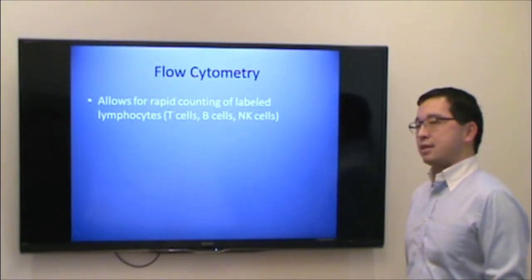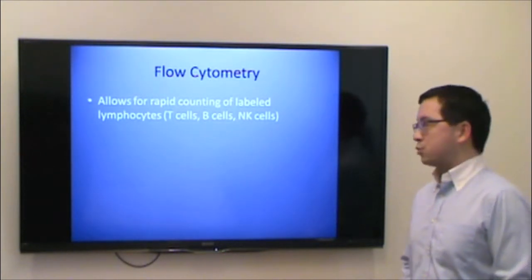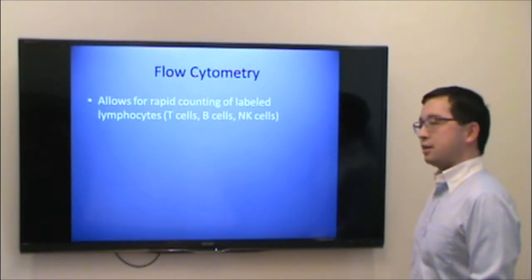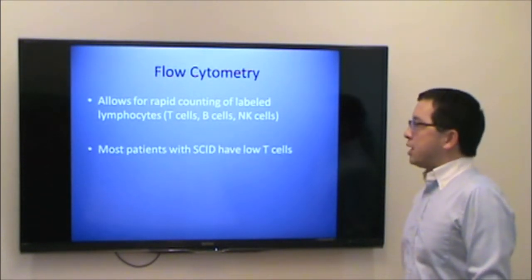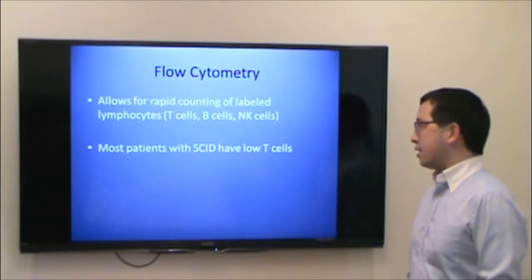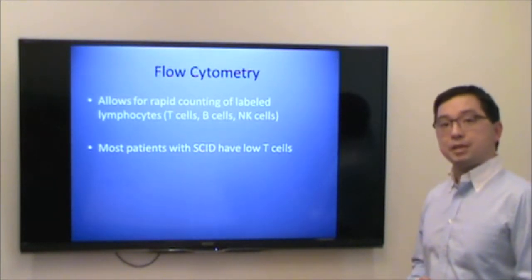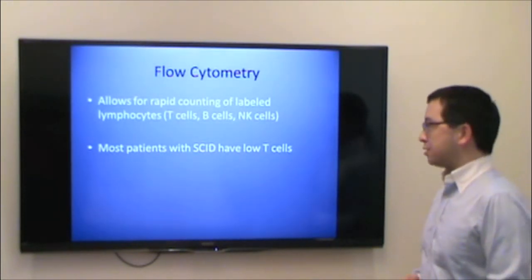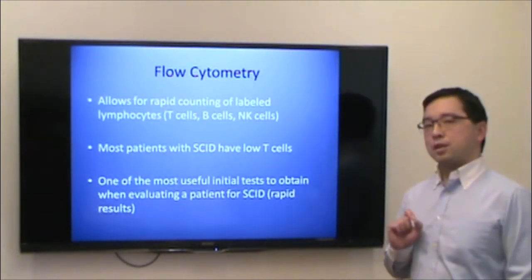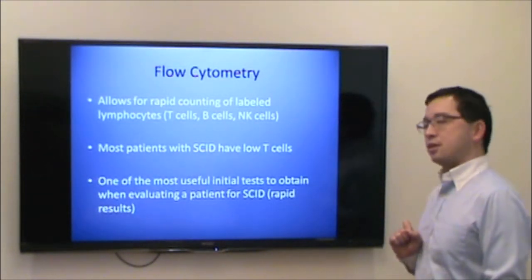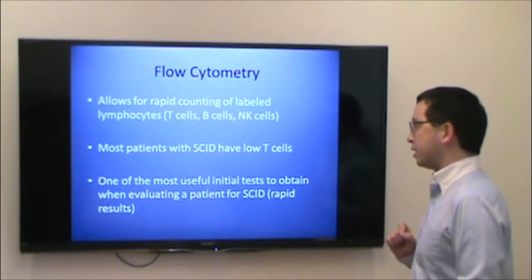Flow cytometry is a rapid method of counting labeled lymphocytes, which include T cells, B cells, and natural killer cells. Most patients with severe combined immune deficiency have absent T cells, and they may or may not also have absent B cells and natural killer cells. It's really one of the most useful initial tests to obtain when you're suspecting a patient to have severe combined immune deficiency.